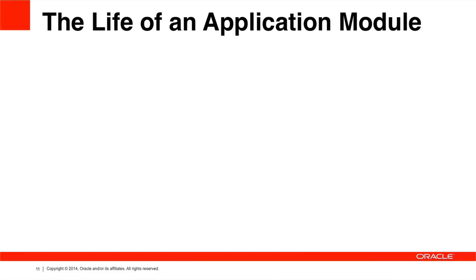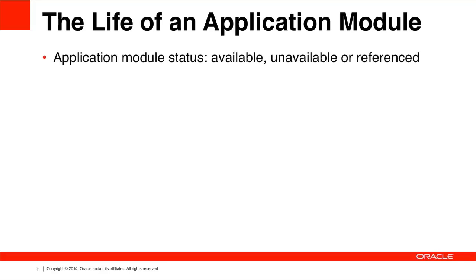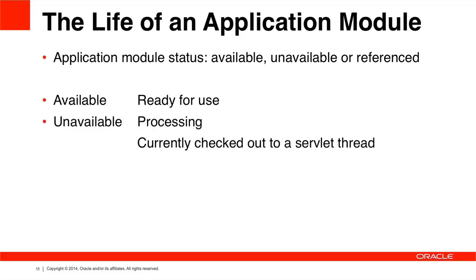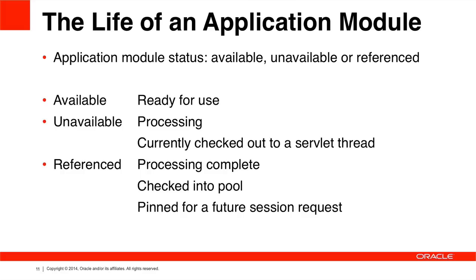At its very basic, once an Application Module is instantiated, it can have three states or statuses: Available, Unavailable, or Referenced. Available means the Application Module instance is ready for use. Unavailable means it was instantiated at some point, it was available, but currently it's being processed — it's checked out to a servlet thread and doing some work. Referenced is the other end of that, where processing is complete, the AM is checked back into the pool and pinned there for the future session to return so that the referenced AM can be returned to that particular session.